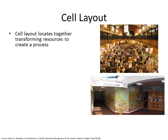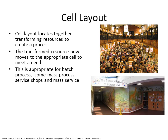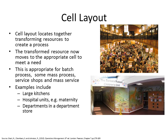Cell layout locates transforming resources together to create a process. The transformed resource moves to the appropriate cell to meet a need to be transformed in a particular way. This is appropriate for batch processes, some mass processes, service shops, and some mass services. Think of your kitchen — you've got all the things you need to make a small transformation: transforming ingredients into cooked food, with your cooker, chopping board, and sink. Examples in our pictures include a hospital baby unit and a department store with trousers in one location and shirts in another.